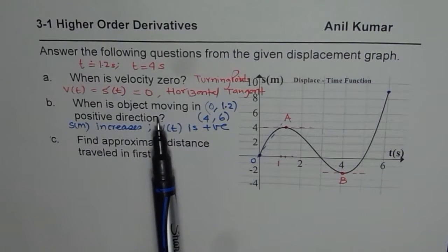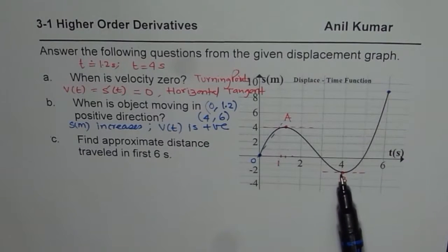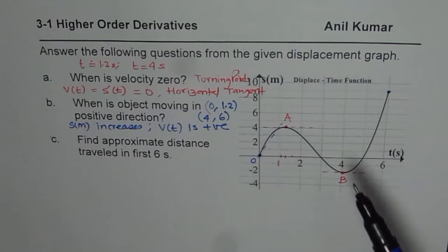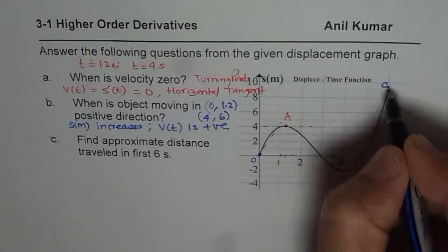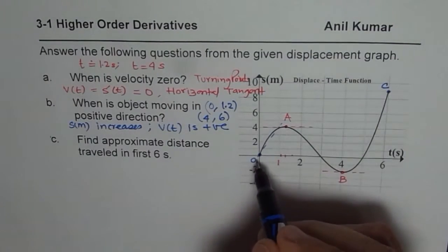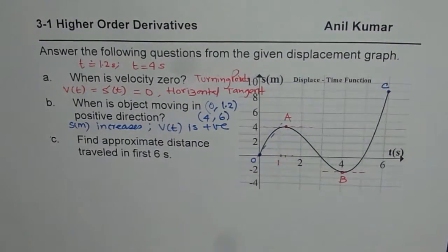So during this interval we see that the displacement increases. And velocity is positive. So if you draw a tangent its slope will be positive in this interval. So let me say C here. So from B to C and from 0 to A object is moving in positive direction.